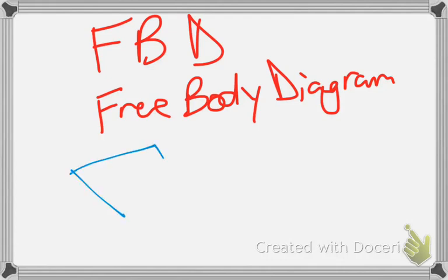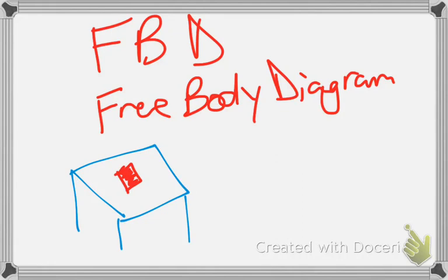Let's say you have a table, and you have a book sitting on the table. What are all the different forces that this book is experiencing? Well, the book has mass, so it has weight — gravity is acting on it, pulling it down. We also know that the table itself has to be producing a force on this, otherwise the book would be moving. So the table has to be pushing up on the book basically in the same amount that gravity is pulling down.